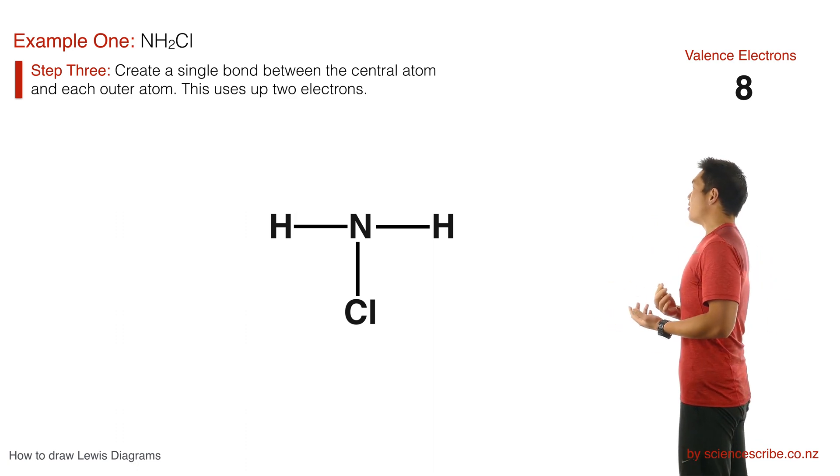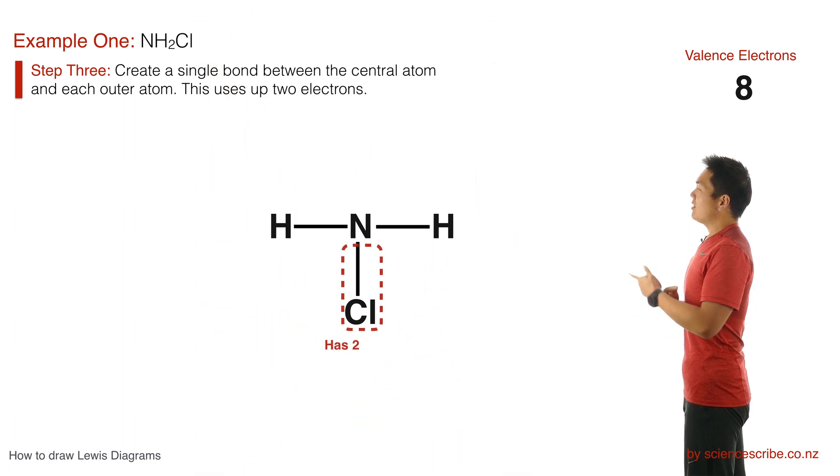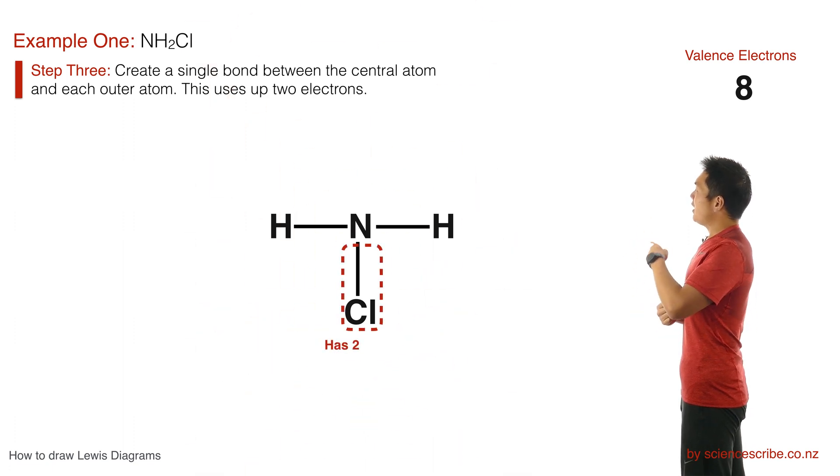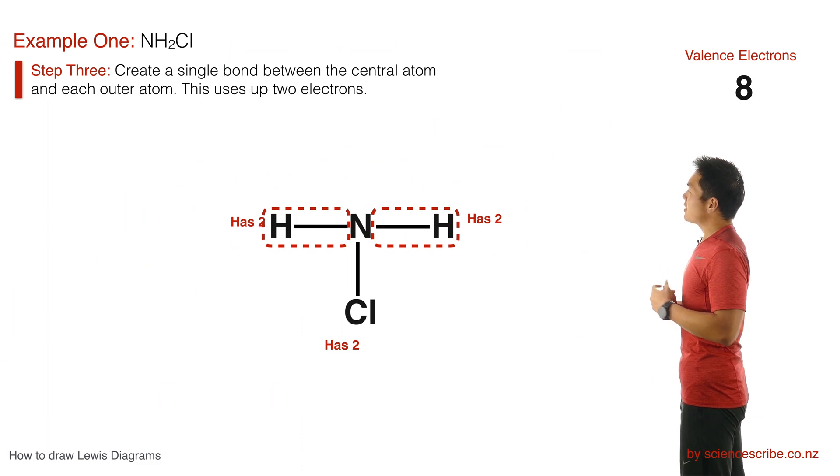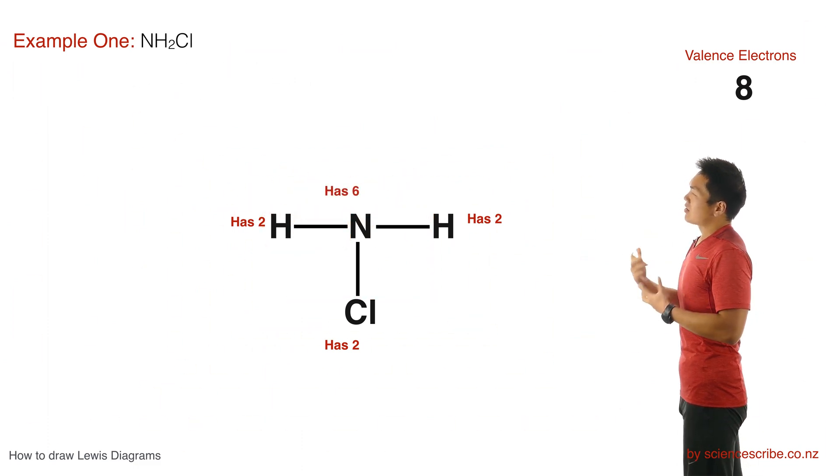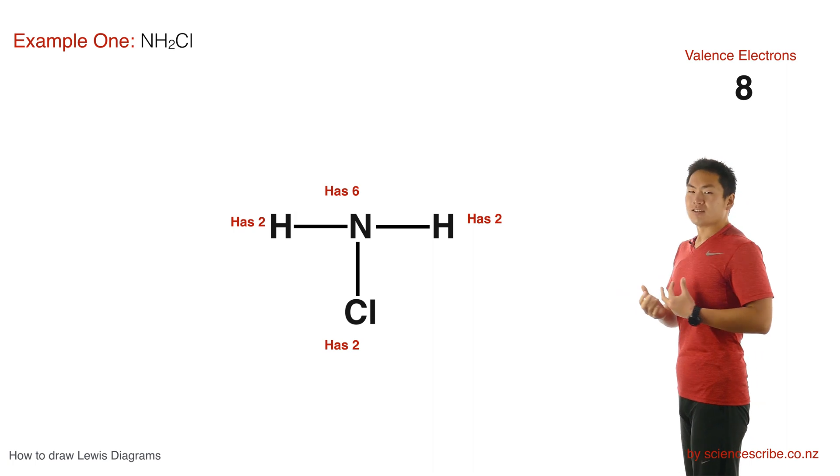The next thing I'm going to do is that I'm just going to do a quick count of the number of electrons on each atom right now. I can see that chlorine has two electrons, I can see that each of the hydrogens have two electrons, and I can see that the nitrogen, because it's got three bonds around it, has six electrons.